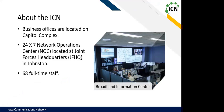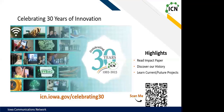For those that don't know, the ICN is the state-owned fiber network, broadband carrier, and internet service provider. We are officed in the Grimes building on the Capitol complex. We have a 24-by-7 network operation center at Joint Forces headquarters in Johnston. We have about 68 full-time staff plus another 50 or so contractors across the state, and we are celebrating our 30th year of service. We'd love for you to scan our QR code and take a look.